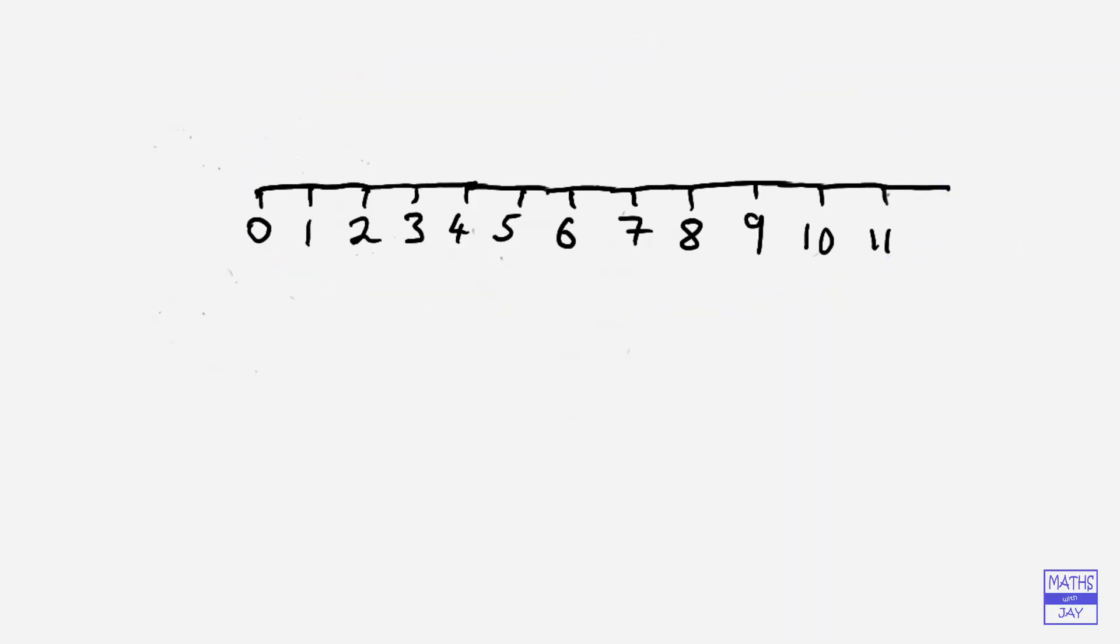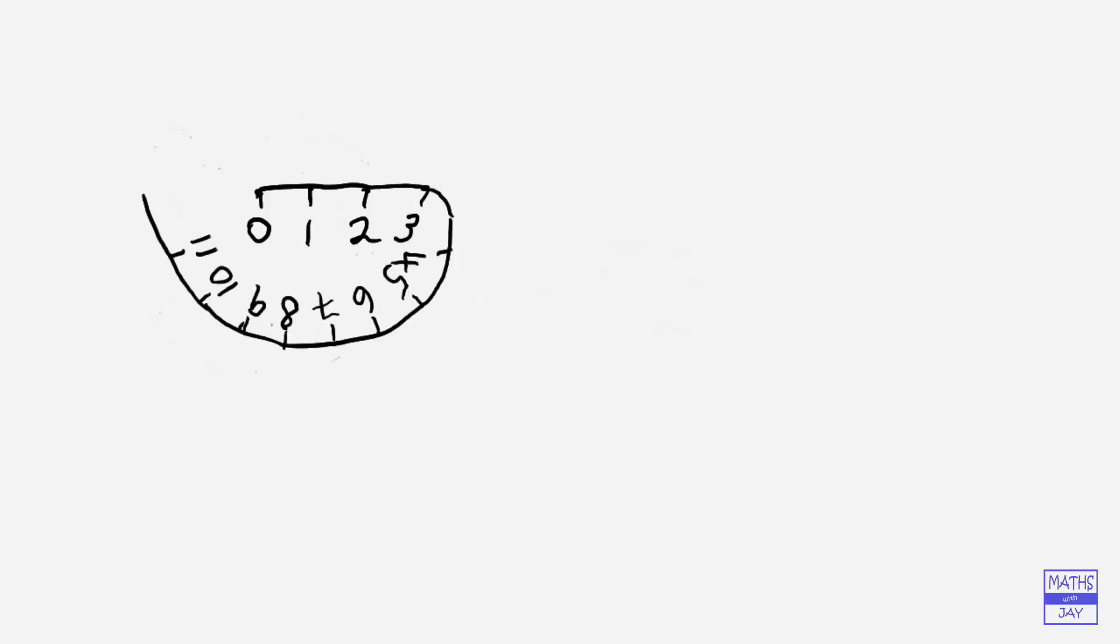And we're going to turn this number line into a circle, so it'll look a bit like a clock. And then we can do arithmetic using this clock. So all our answers are going to be numbers between 0 and 11, whether we're adding or subtracting.